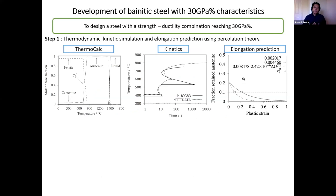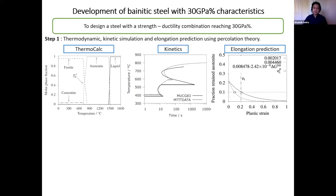Like all new steel or alloy development for varied applications, the process everyone across the globe uses starts with simulations — doing a lot of thermodynamic and kinetic calculations, even going as close as predicting elongation using percolation theory. People can go into my thesis and Harry's papers to see how connectivity of austenite leads to ductility, and once that connectivity reduces to a threshold of about 10% austenite left in the microstructure, then failure can start.